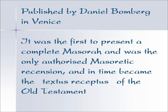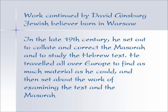The word Messora means to hand down, to pass across from one person to another. Jacob Ben Chaim took all these different documents and correlated them one to the other to see what the usages were, putting them together in this Masoretic recension. His work was continued by a Jewish believer named David Ginsburg, born in Warsaw to a Jewish family, who converted around age 15 or 19. He set out to collate and correct the Masoretic text, traveling all over Europe to find as much material as he could, then examining the works of the Messora to see how documents compared with one another.